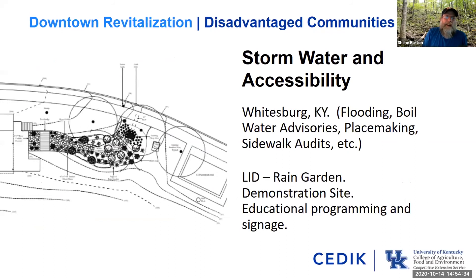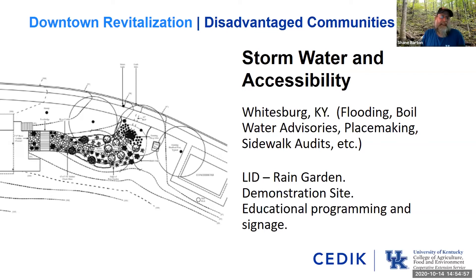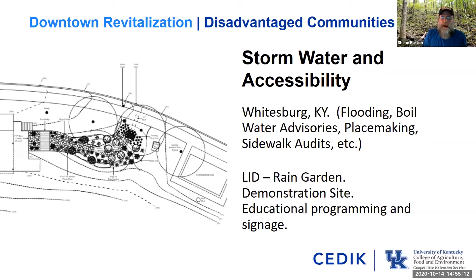Another example in eastern Kentucky is Whitesburg, which came out of downtown revitalization efforts where the community was flooding and having boil water advisories often. Through an economic development program thinking about placemaking and accessibility, they did sidewalk audits and realized they had a great opportunity to do low-impact development rain garden demonstration sites that treat stormwater on site, providing an outlet for education and programming to have broader conversations around stormwater management in that small community.